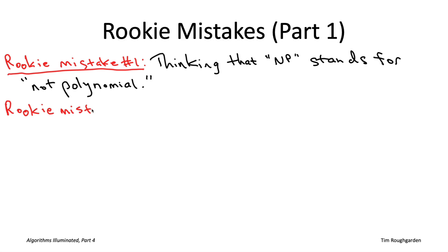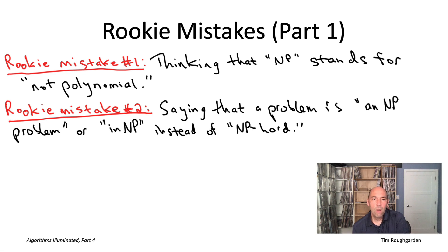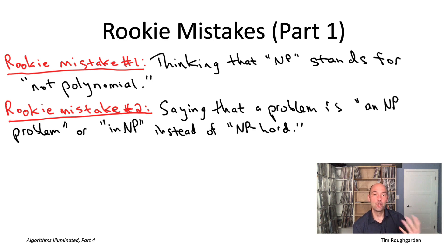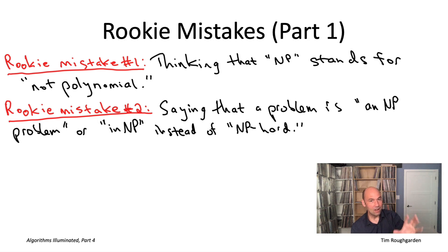Rookie mistake number two, which I hear quite commonly, is when someone means to say a problem is NP-hard but instead says it's an NP-problem or is in NP. When you say a problem is in NP, you're actually saying something positive about the problem — something about tractability rather than intractability. Specifically, a problem is in NP if you can quickly verify solutions, the way that if I give you a filled-out Sudoku puzzle, it's easy to check it's a valid solution. So don't forget the 'hard' after NP.